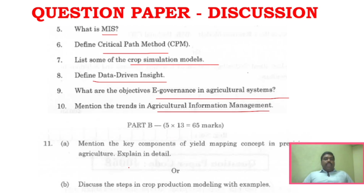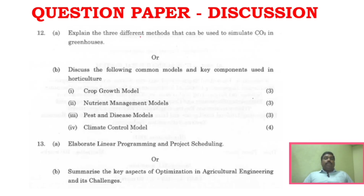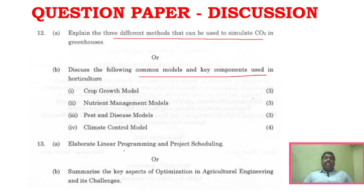For Part B questions: Unit 1 includes yield mapping concept and crop production modeling. Unit 2 covers three different methods to simulate CO2 and common models used in agriculture. Unit 3 covers programming and project scheduling, and optimization techniques in agricultural engineering.